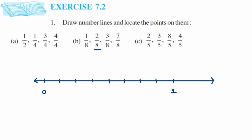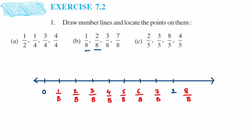Now we're going to start writing the numbers: 1/8, 2/8, 3/8, 4/8, 5/8, 6/8, 7/8, and then 8/8 which is 1. In the question they ask us to plot 1/8, 2/8, 3/8, and 7/8. So here is 1/8, here is 2/8, here is 3/8, and here is 7/8 — we have plotted all four fractions.